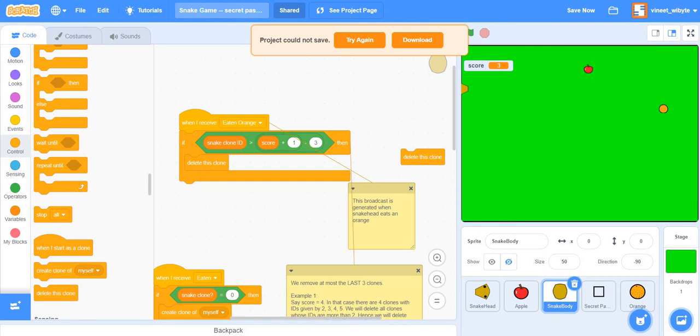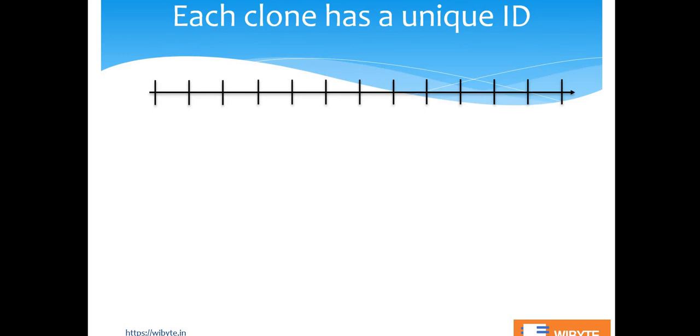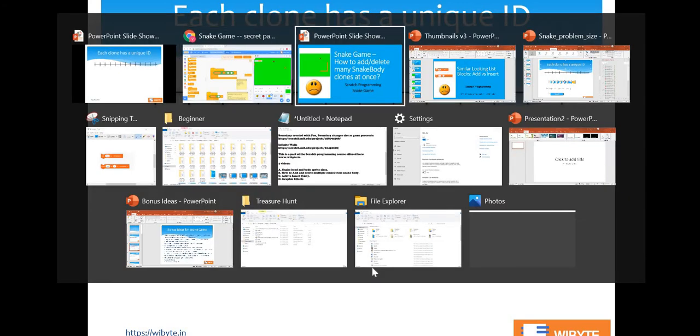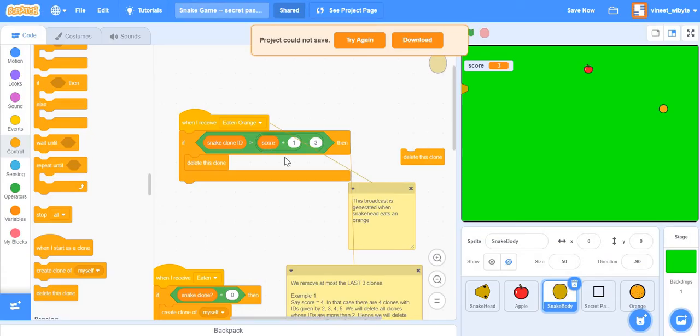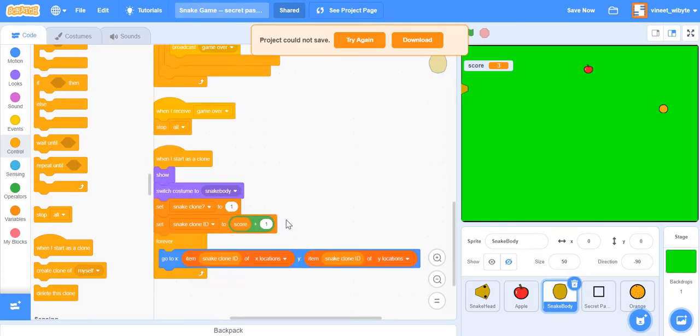Now, before I get there, I just want to make an observation, which actually is there as far, which has been said before, but I just want to highlight this more clearly here, sort of reiterate this point is that every clone that you're creating has got a unique ID. Now, where does this come from? Remember, in the Scratch project that we built, there is something called snake clone ID, which was a variable only for this sprite. Now, the moment we do that, it means that every clone is maintaining its own copy of this variable called snake clone ID.